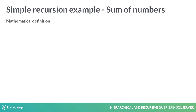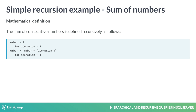Knowing what recursion is, let's try out a simple recursion problem. The problem we want to solve is to calculate the sum of consecutive numbers. It can be defined as shown on the slide. It is 1 for the first iteration, and for each following iteration the number of the current iteration and the sum of the previous iteration is added.